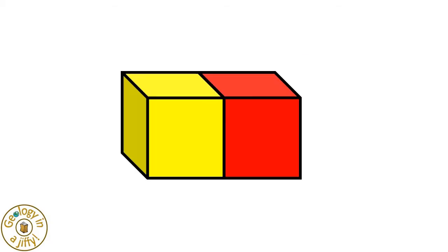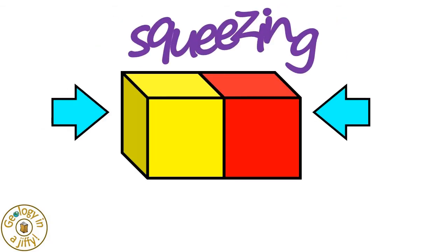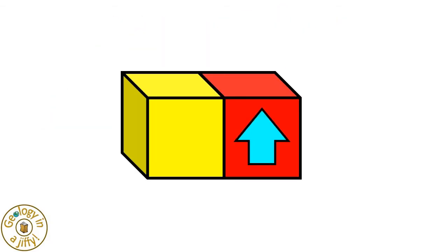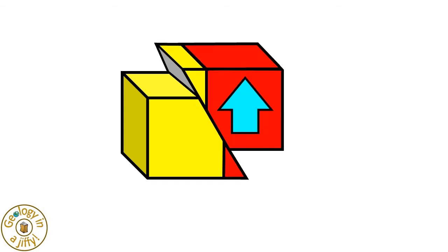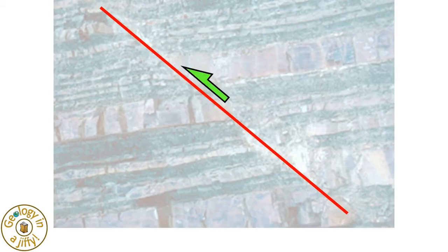The second type of fault happens when rocks are squeezed together, causing one block to move upwards in relation to the other block, creating a reverse fault, such as in this photo, where the rocks to the right have moved upwards compared to the rocks on the left.